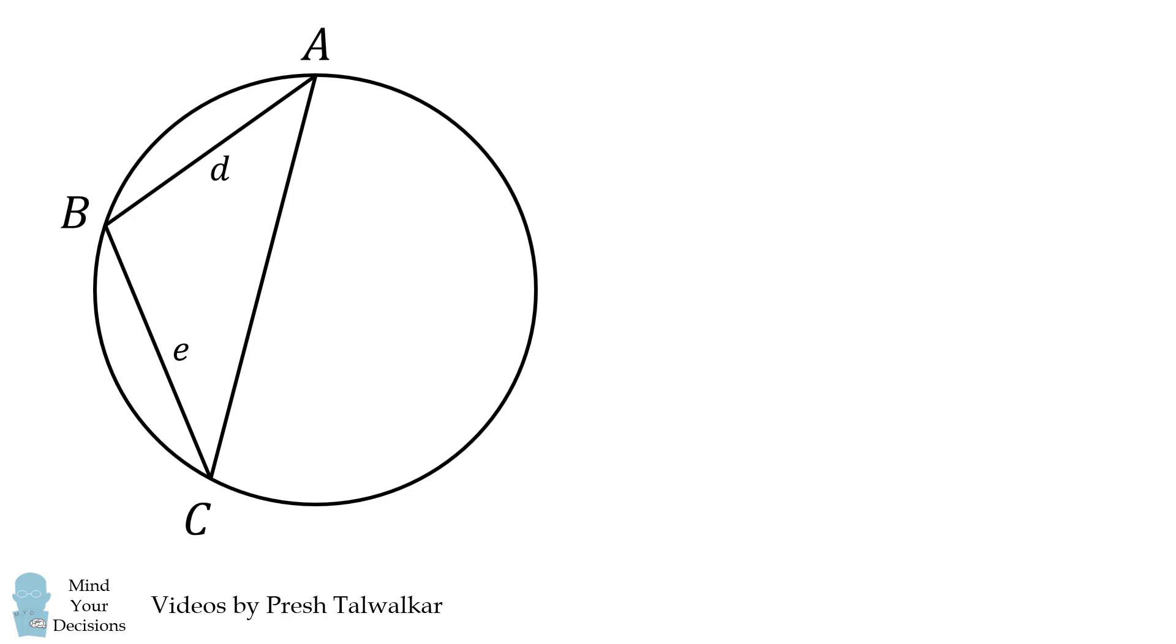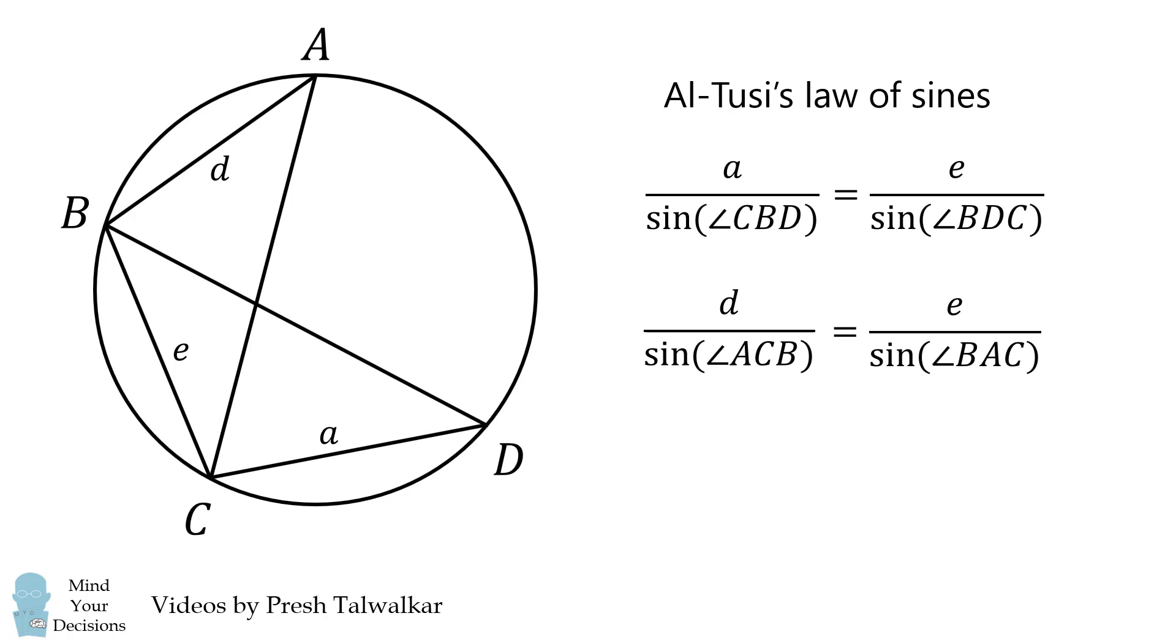We have a similar equation in triangle ABC. Side D divided by its opposite angle is equal to side E divided by its opposite angle. Let's now take a look at these two equations. We're going to notice something that relates them.